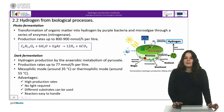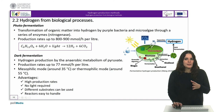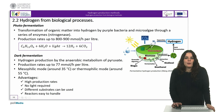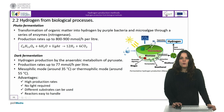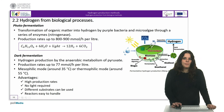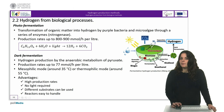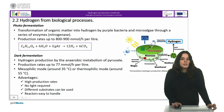Photo-fermentation is the transformation of organic matter into hydrogen by purple bacteria and microalgae through a series of enzymes. It only happens in the presence of light. If microalgae are used, one method to obtain hydrogen is to deprive the algae of sulfates so that the algae begins to generate hydrogen instead of the oxygen it would generate through photosynthesis. Production rates go up to 800–900 millimoles per hour per cubic meter. The general hydrogen production reaction can be expressed as shown in this equation.